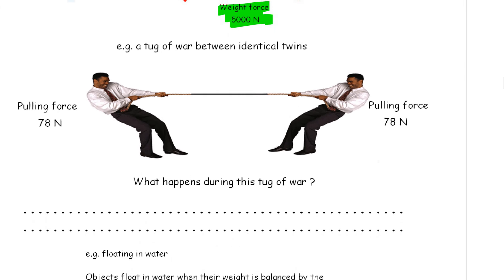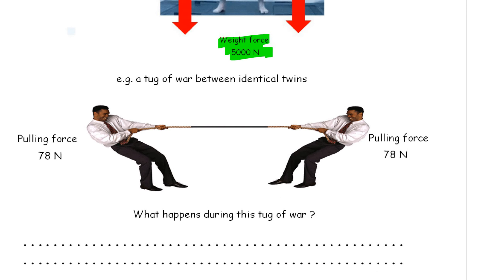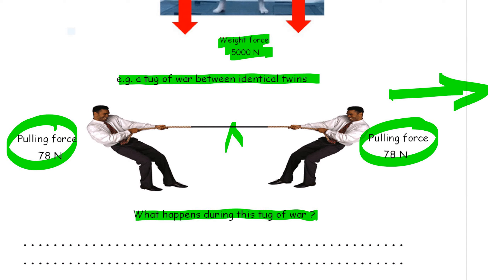Last example. A tug of war between two identical twins. They're both pulling with an equal but opposite force. What's going to happen during this tug of war? Well, the little piece of rope here will stay absolutely still. The forces are balanced.